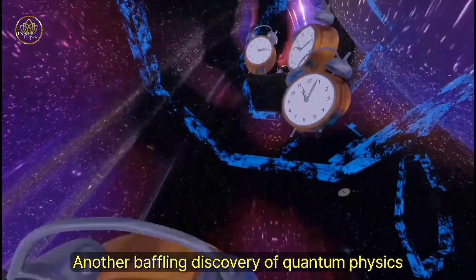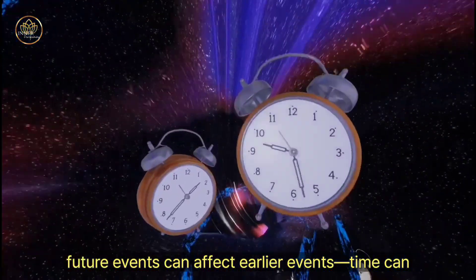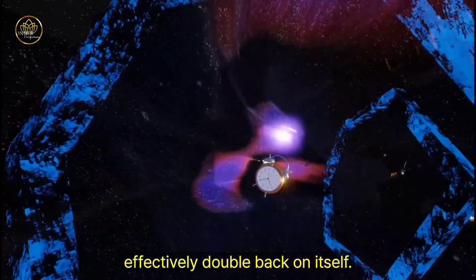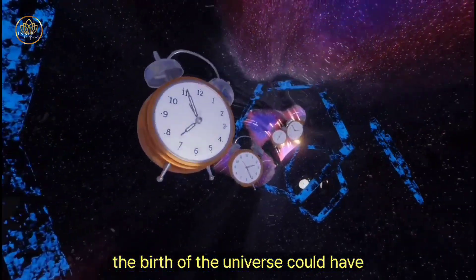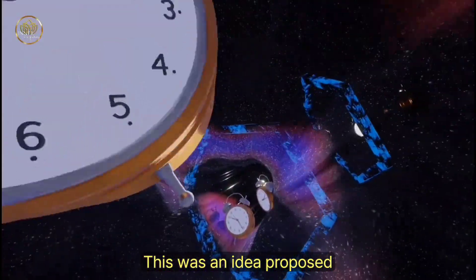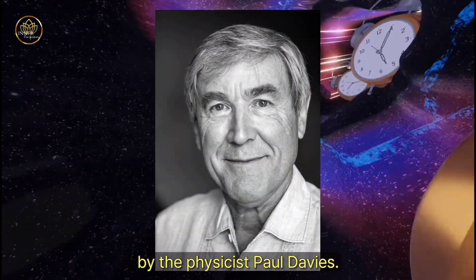Another baffling discovery of quantum physics is that in the quantum world, future events can affect earlier events. Time can effectively double back on itself. More broadly, this opens the striking possibility that the birth of the universe could have been caused by its future. This was an idea proposed by the physicist John Wheeler and later developed by the physicist Paul Davies.